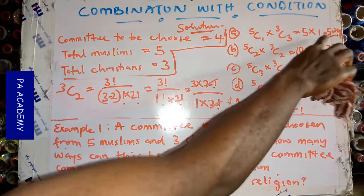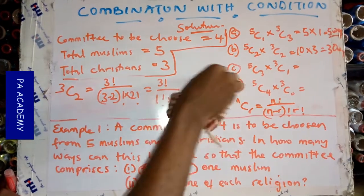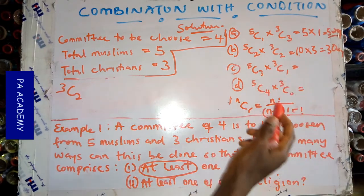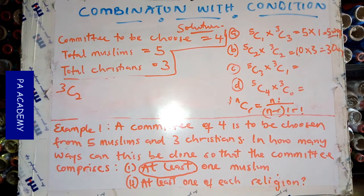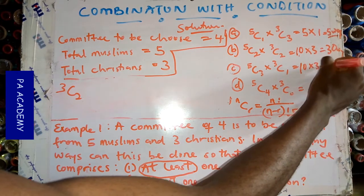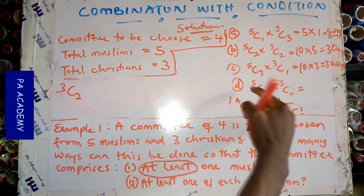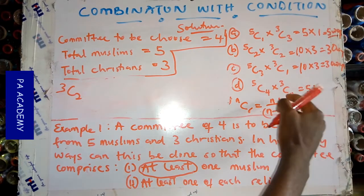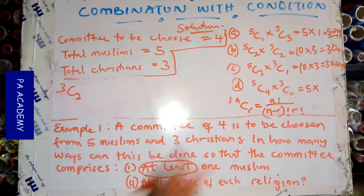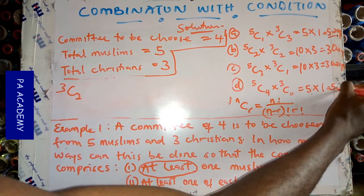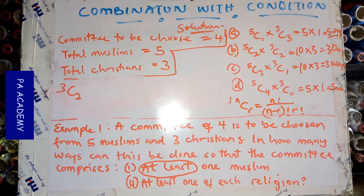Similarly, for case C: 5C3 × 3C1 = 10 × 3 = 30 ways. For case D: 5C4 × 3C0 = 5 × 1 = 5 ways. Using the same combination formula method shown for A and B, these results follow directly.